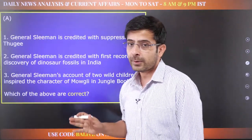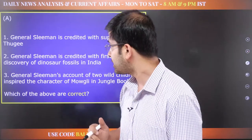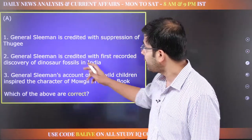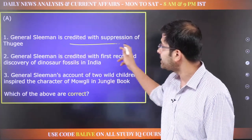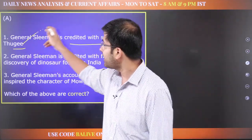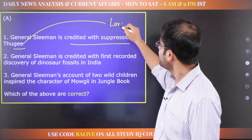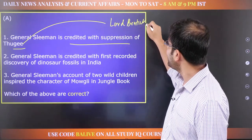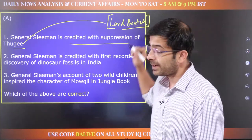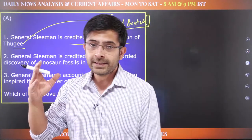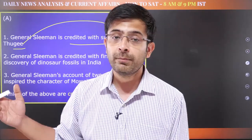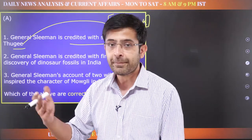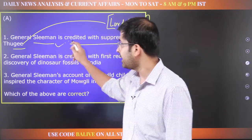First, let us look at the questions from yesterday. We discussed Nawab Wajid Ali Shah and General Sleeman. The first question: General Sleeman is credited with the suppression of Thagi. Lord Bentinck was the main person, but the actual person doing it on the ground on his behalf was General Sleeman. This is correct.